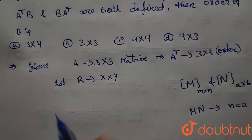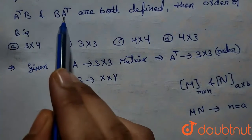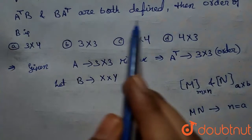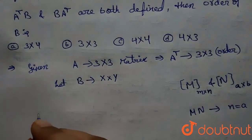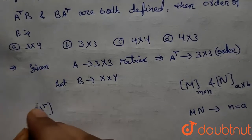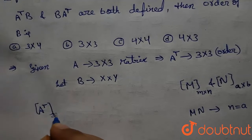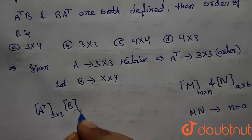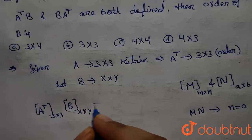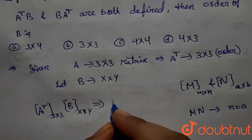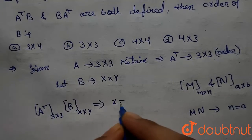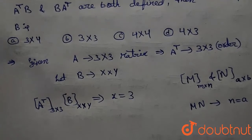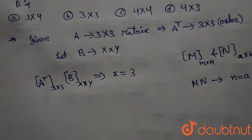Given that A transpose B is defined: A transpose has order 3×3 and B is a matrix of order X×Y. For this multiplication to be defined, X must equal 3. Also, B A transpose is defined.